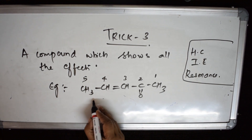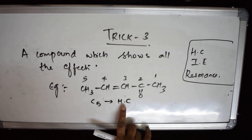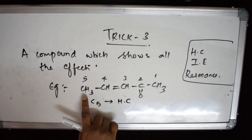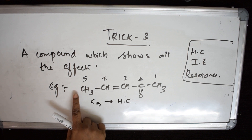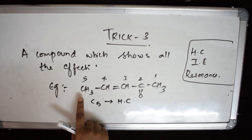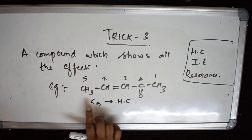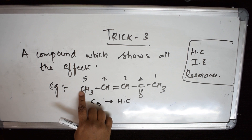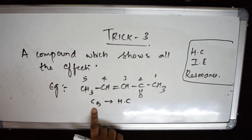C5 is a carbon which shows hyper conjugation. What is hyper conjugation? It is the interaction of electrons in the sigma bond with the adjacent pi bond, or adjacent empty or partially filled p orbitals. So C5 carbon shows hyper conjugation.